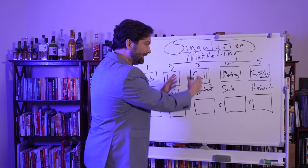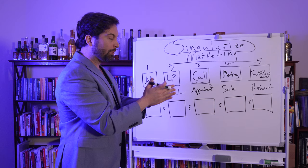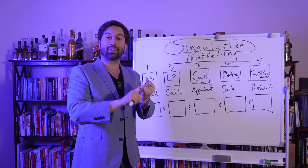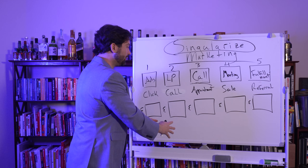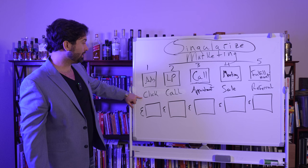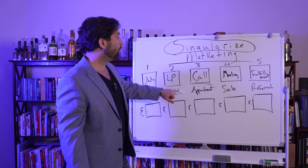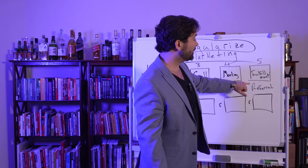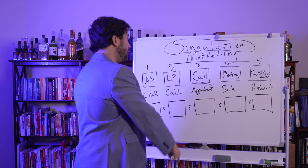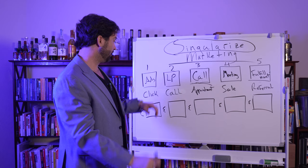Let's review: every step of the way, if you reduce scope and eliminate multiplicity, your business will make more money, faster, with more profit, more time wealth, more money wealth, and less stress. With your ads, you want one thing only: a click. Landing page: one thing only — a call. The call: one thing — set an appointment. The meeting: one thing — a sale. Fulfillment: one thing — a referral. Click, call, appointment, sale, referral. That's it.